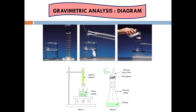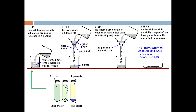Volumetric analysis uses a solution — you need to do a titration, and at equilibrium or when the reaction occurs, there is a change of color for the solution, and you get the result of your analysis. But for gravimetry analysis, in this process you need to do a reaction in which you will produce a precipitate. After you get the precipitate, you can filter it and calculate using a certain calculation.